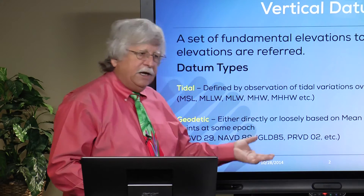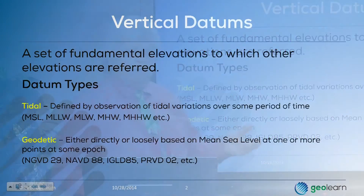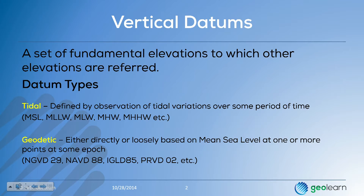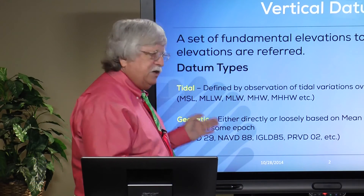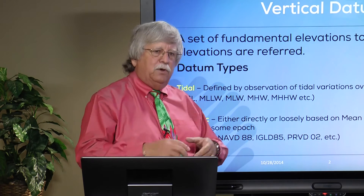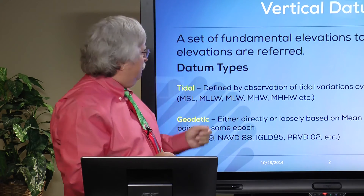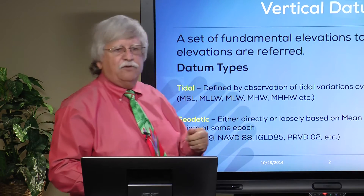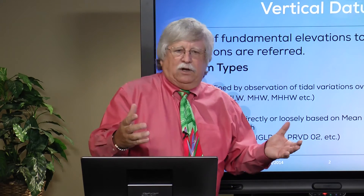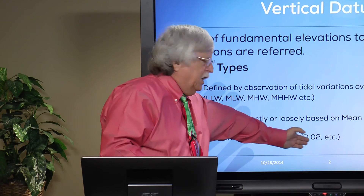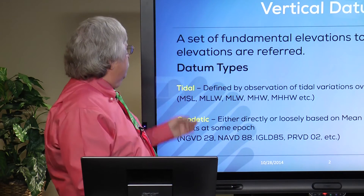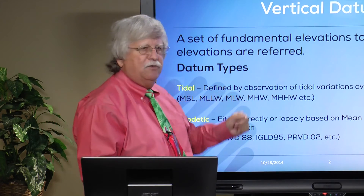The geodetic vertical datum is an attempt to have a consistent set of heights over a larger piece of geography. So if I live on a small island, a tidal datum and a geodetic datum could in fact be the same. You can adopt mean sea level as the definition of the geodetic datum for a small island, or even a larger one, sort of like the island of Puerto Rico, which is Puerto Rico Vertical Datum of 2002, defined as mean sea level.